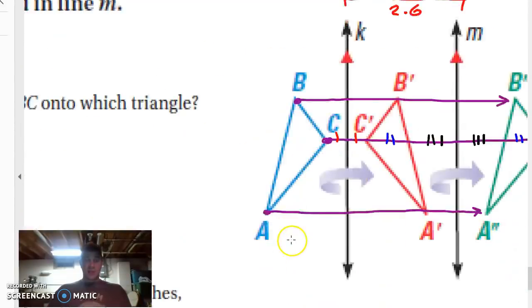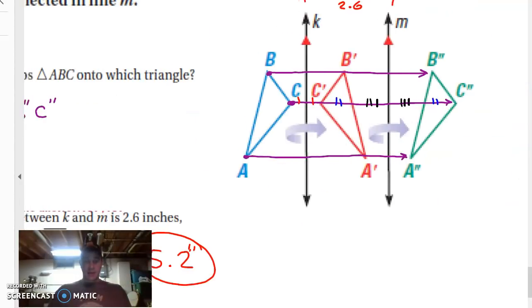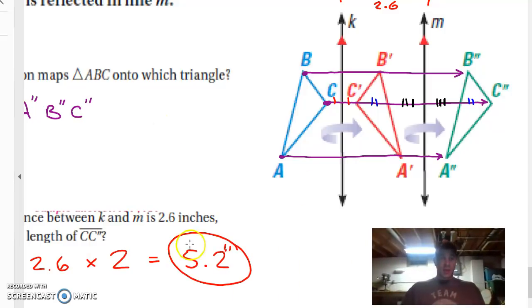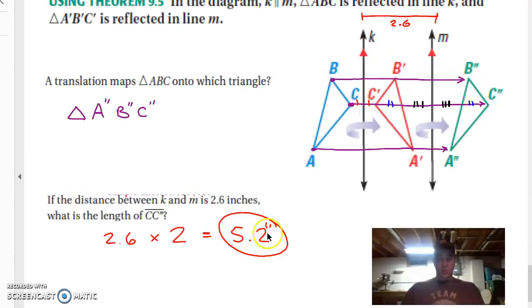Once you've had the opportunity to look at that and try to solve those problems, it should look something kind of like this. The first question had asked us which two triangles is the translation mapping A, B, and C onto? Or excuse me, which triangle? And that would be A double prime, B double prime, C double prime. So we're going from here all the way to this green triangle over here. The trickier question is going to be the distance. If we know that K to M is 2.6, and I marked that up there, I hope you did too, what's the length of C, C double prime?